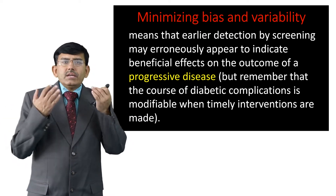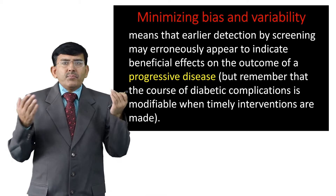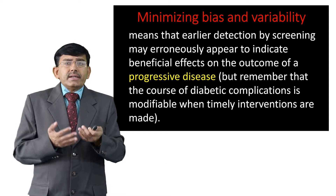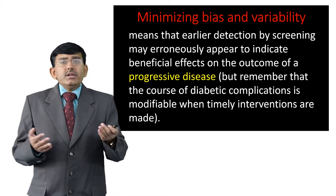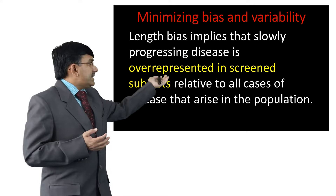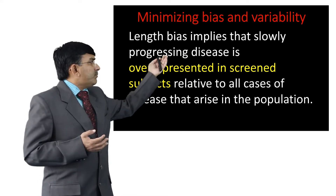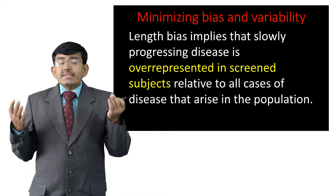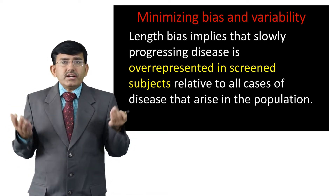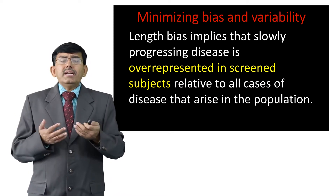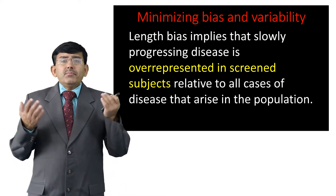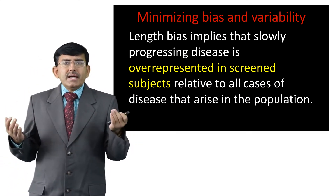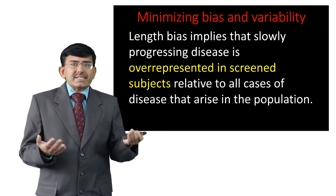Remember that the course of diabetic-specific complications is modifiable when timely interventions are made during all intermediate phases — like acquisition, preprocessing, feature extraction, feature selection, segmentation, and classification. Minimizing bias and variability must also be considered. Length bias implies that slowly progressing disease is overrepresented in screened subjects relative to all cases of disease that arise in the population.